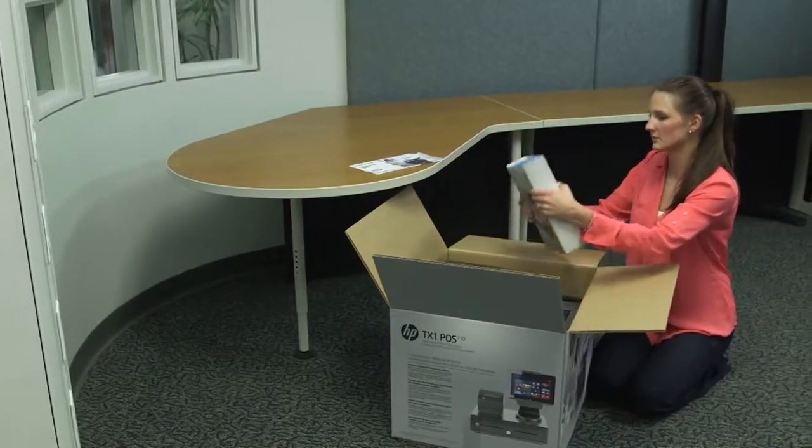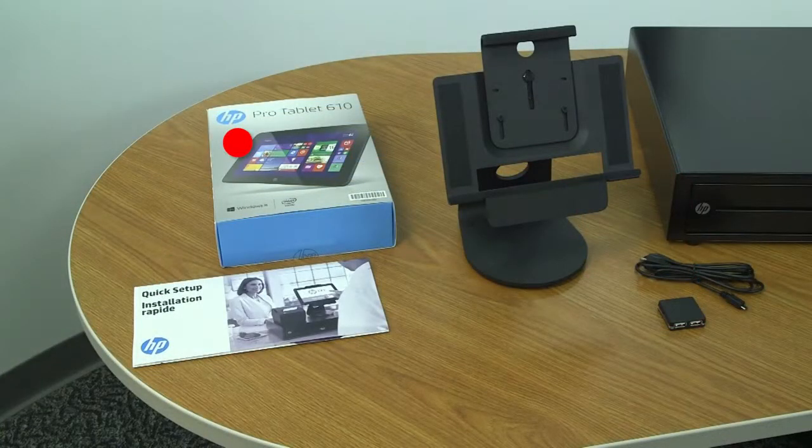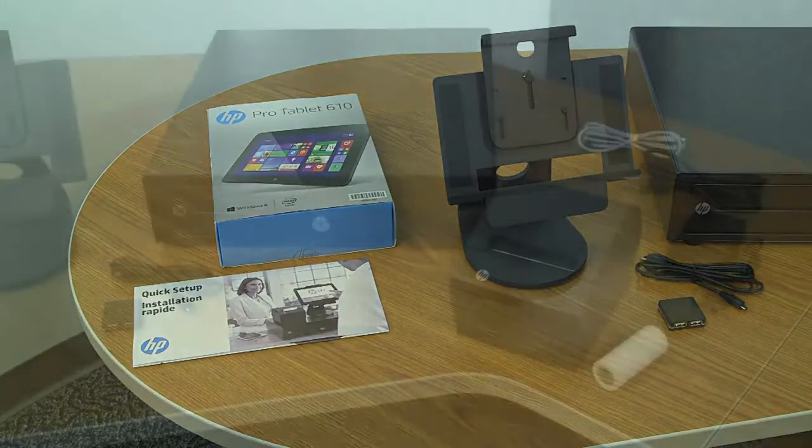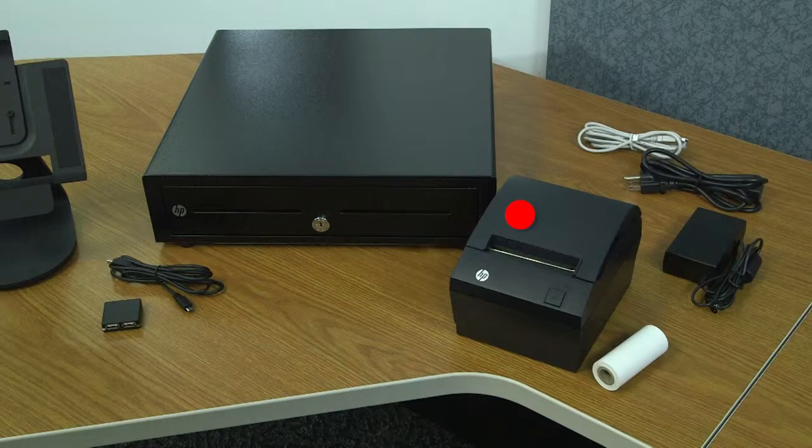In your box, you will have received a quick setup guide, an HP Pro tablet 610, an HP tablet point-of-sale stand, a 4-port USB hub with a micro to mini USB cable, an HP standard-duty cash drawer, an HP receipt printer, power supply, USB cable, and starter paper roll.